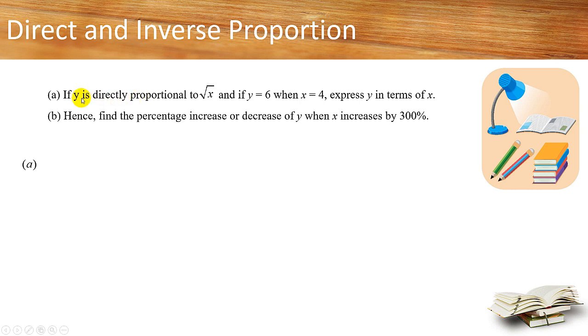As you can recall, when y is directly proportional to square x, the equation connecting y and x is y equals to k times square x. When two variables are directly proportional this will be the equation. But if y is inversely proportional to square x, then the equation will be y equals to k over square x.